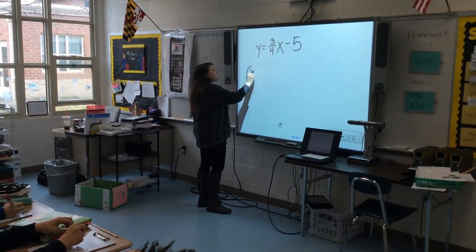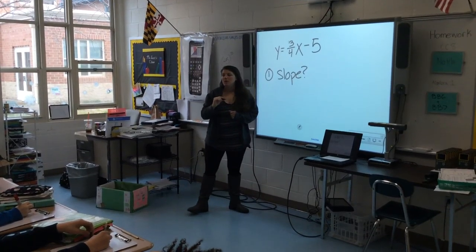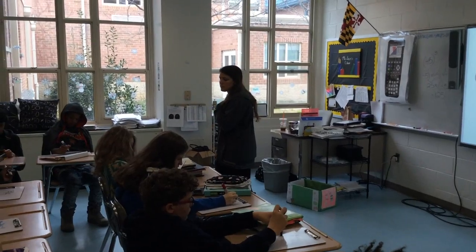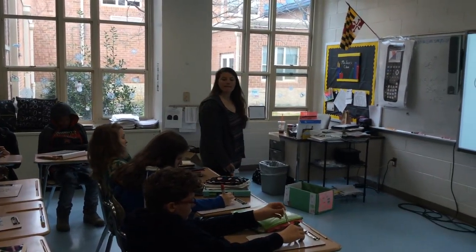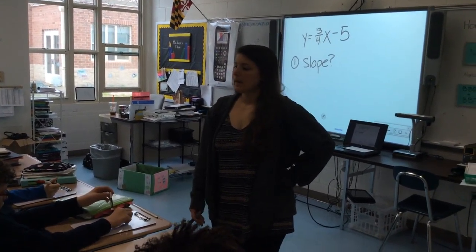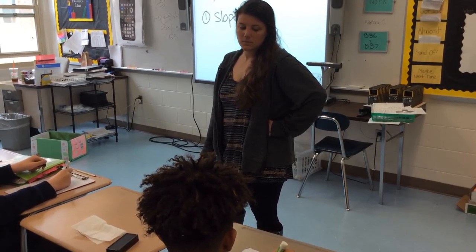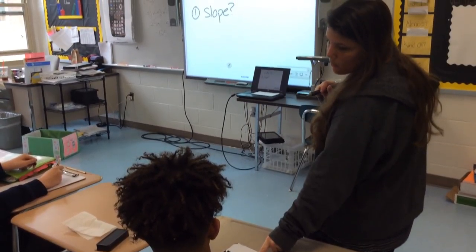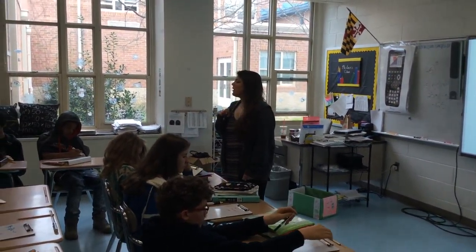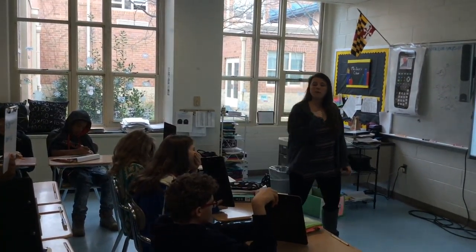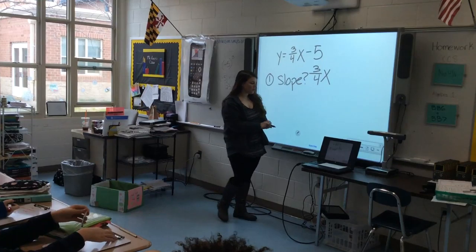My first question to you — if that was the formula of my linear equation, what is the slope of that line? Hold that up in three, two, one. Three-fourths. Excellent job. So a couple people wrote three-fourths X. When we write the slope, we're looking for a number. We don't want a letter in there, so just three-fourths would be our answer.